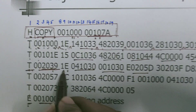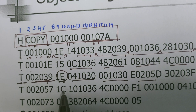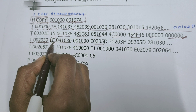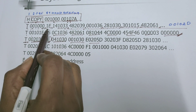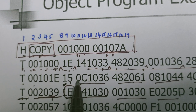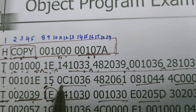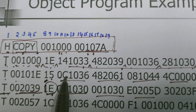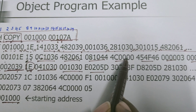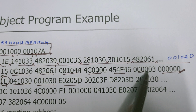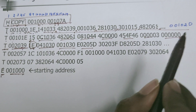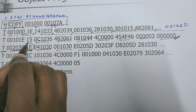Now, let us discuss the length of the text record. If a text record stores 30 bytes, find the hexadecimal equivalent of 30 — it is 1E. The length of the text record is written in hexadecimal value. For this text record, the value given is 15. Counting the bytes: each pair of hexadecimal digits is 1 byte — so 0C, 10, 36 make up the first object code of 3 bytes, and counting through all the object codes gives 21 bytes total. Converting decimal 21 to hexadecimal gives 15. So I hope with this example you have got an idea about the object file.